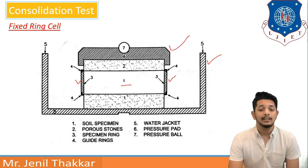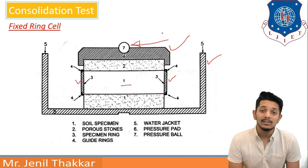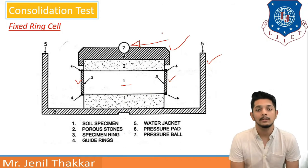Further over pressure pad item 6 is showing and item number 7 there is a pressure ball. Again, the ball will be providing axial loading to the soil specimen. Let us move further.